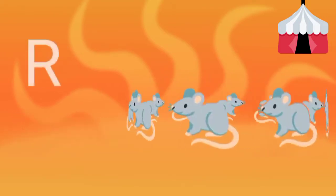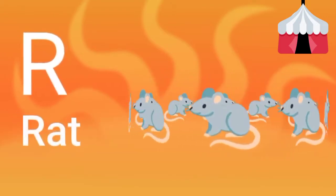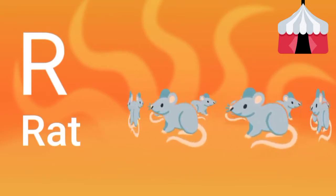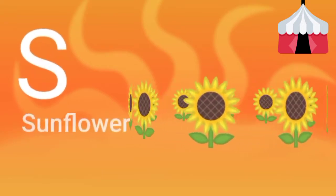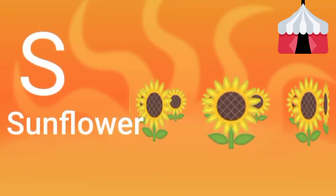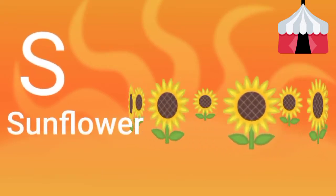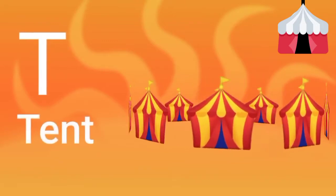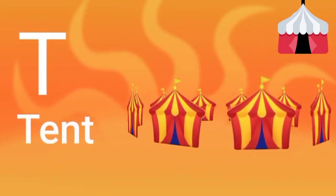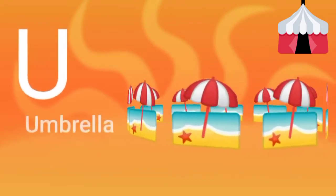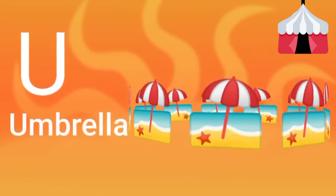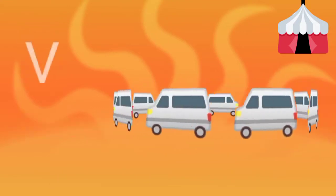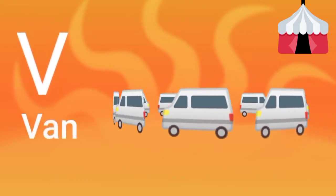R for Rat. S for Sunflower. T for Tent. U for Umbrella. V for Van.